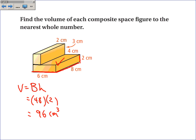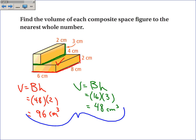The top piece, its volume is again the area of the base times the height. But the base is 2 times 8 is 16, and the height is 3. So the volume of this top piece is 48 cubic centimeters. So adding these two pieces together, I get 144 cubic centimeters.